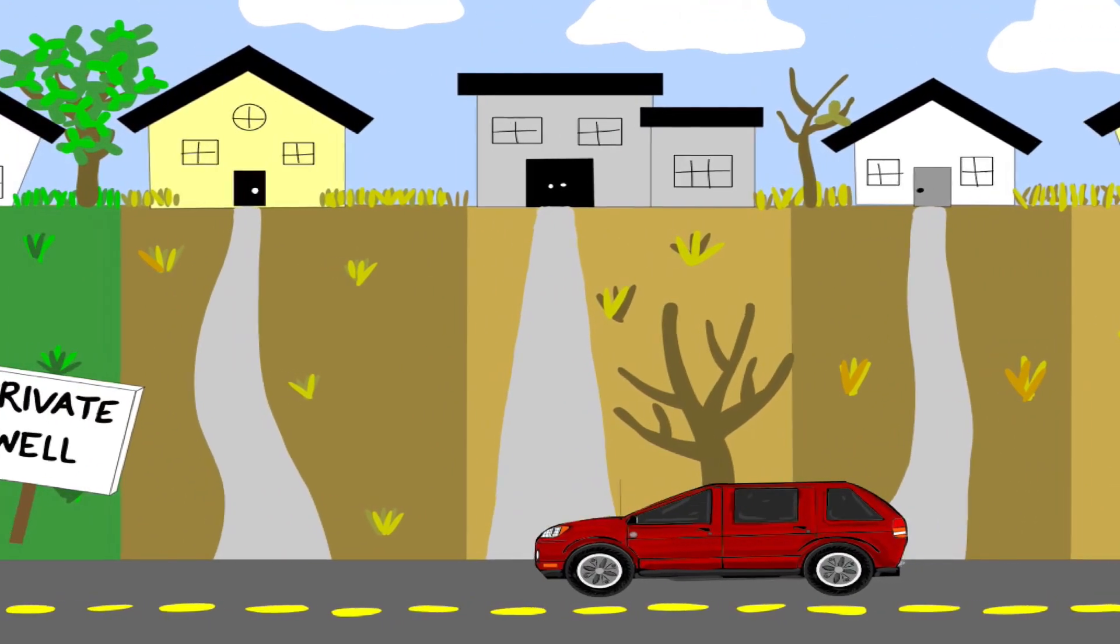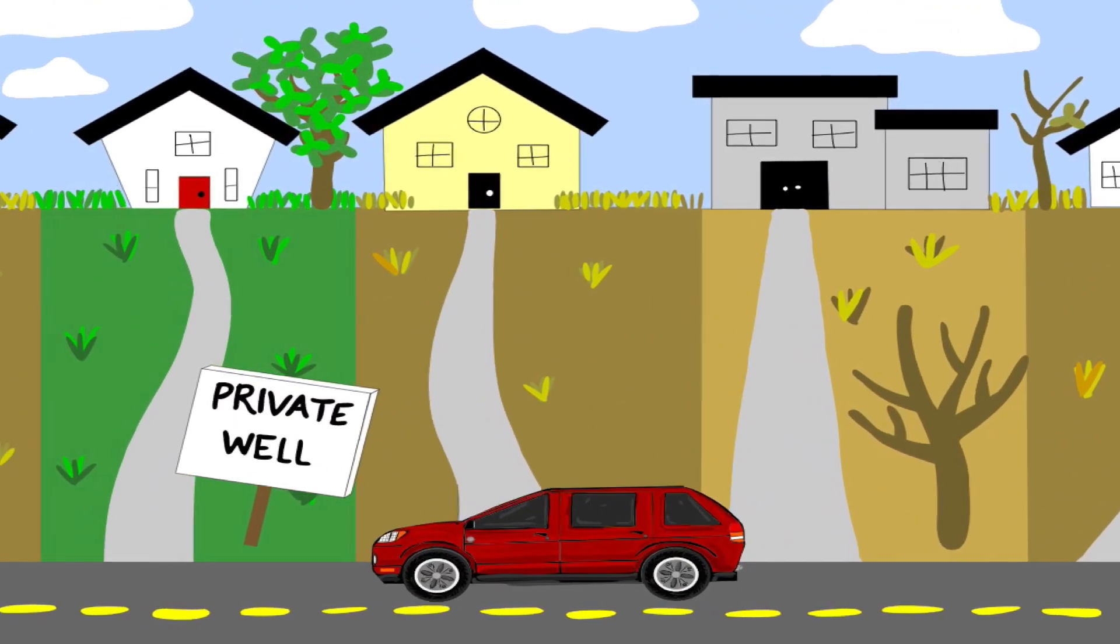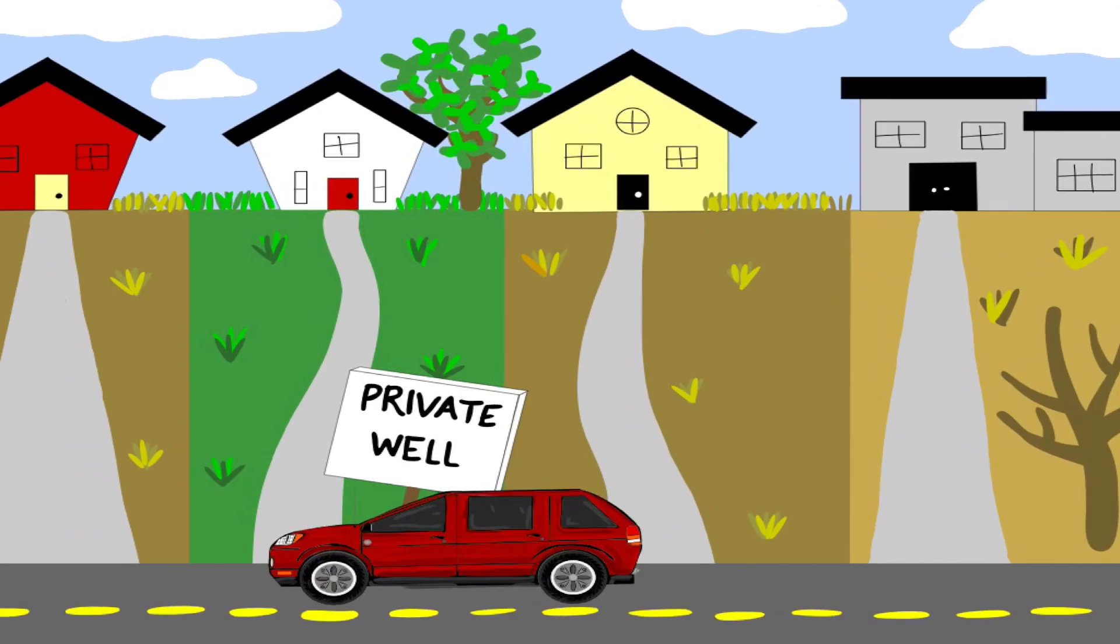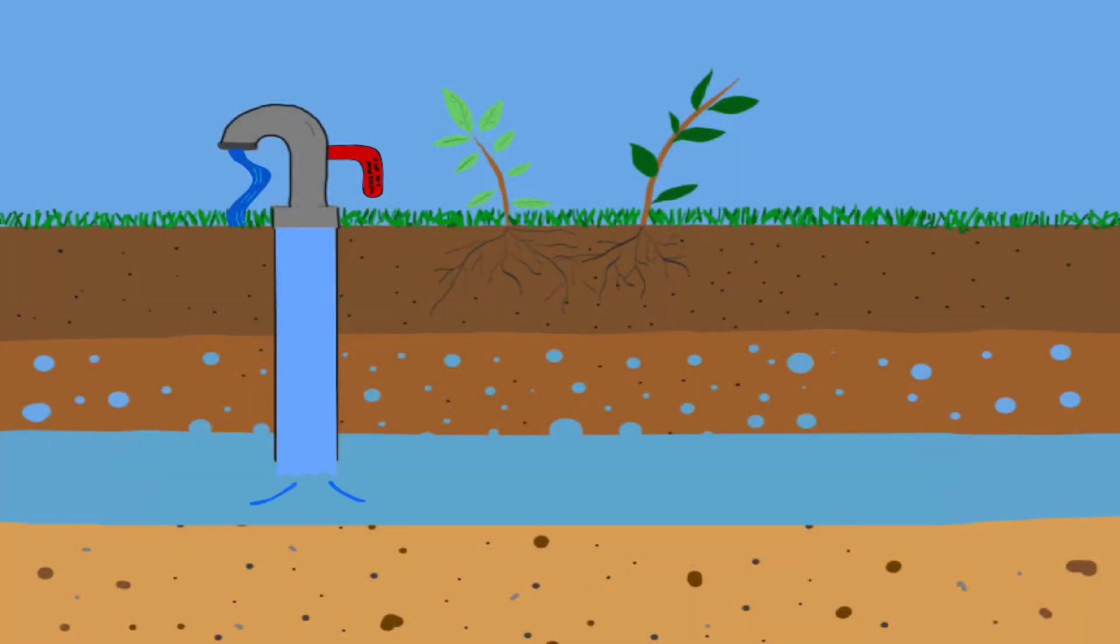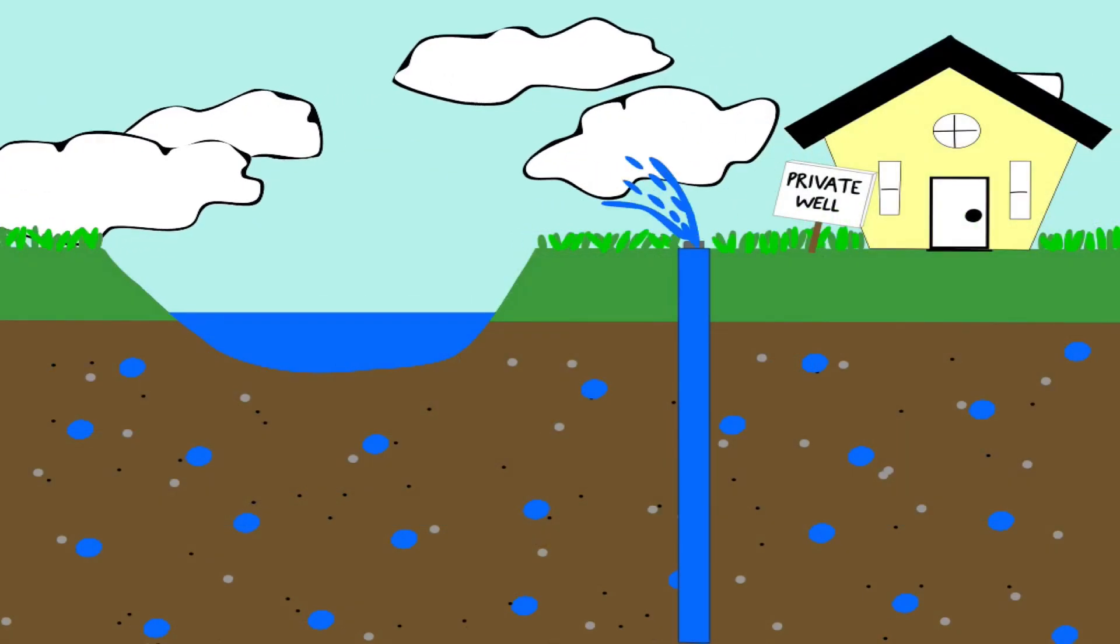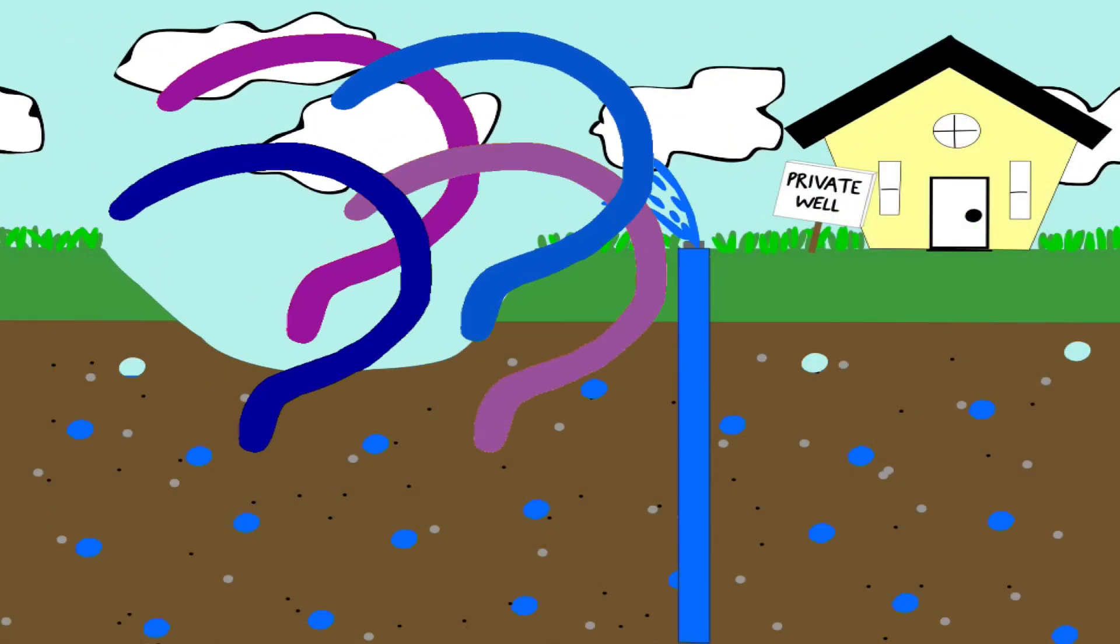Have you ever seen a sign during a drought saying private well with a nice green lawn? Even though the water is being pumped up from underground, it still affects surface waters. How is that possible?